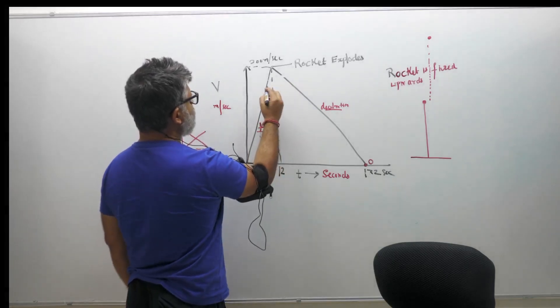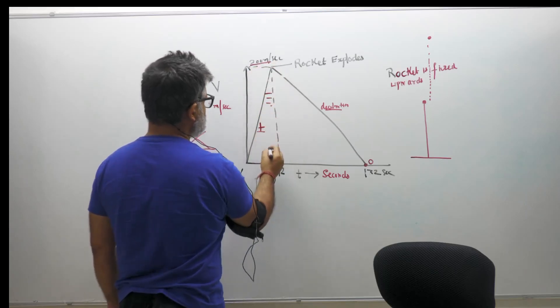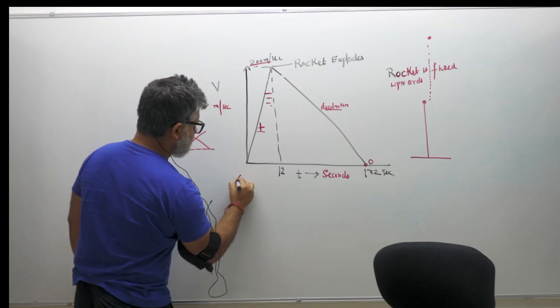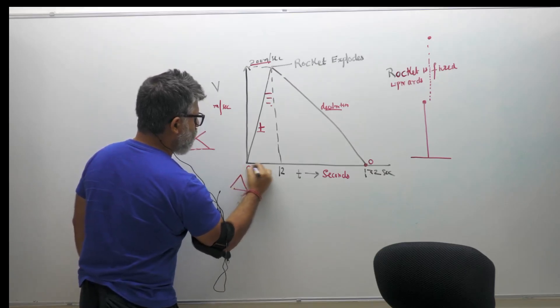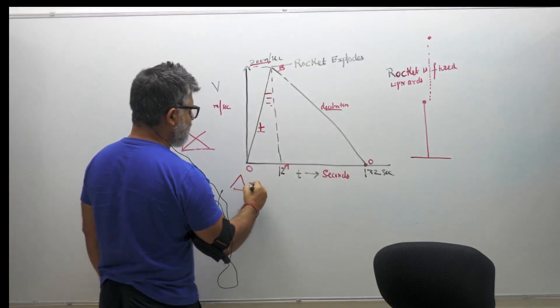One is you can solve it graphically, which means if you notice the v into t, this is 200 meters per second. So if I notice this triangle, the triangle which is OAB, right, the area of the triangle OAB...